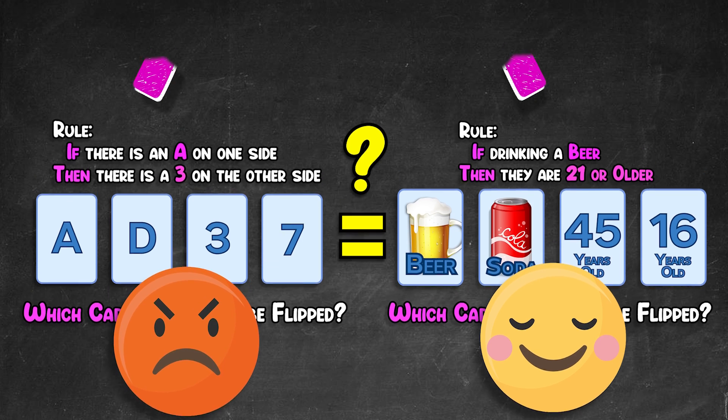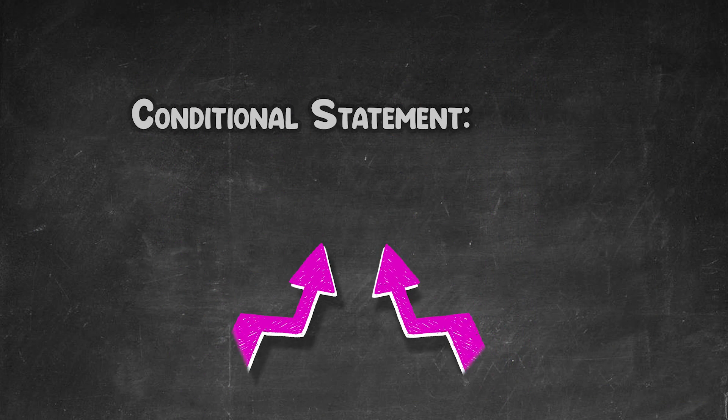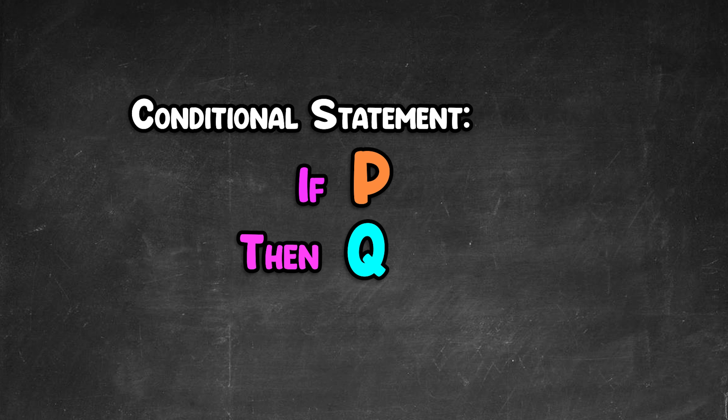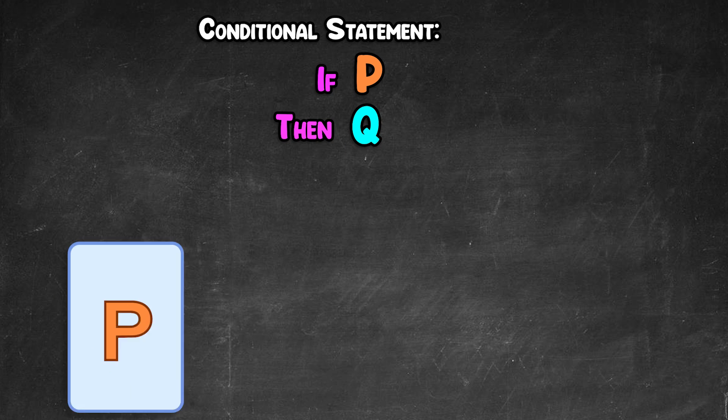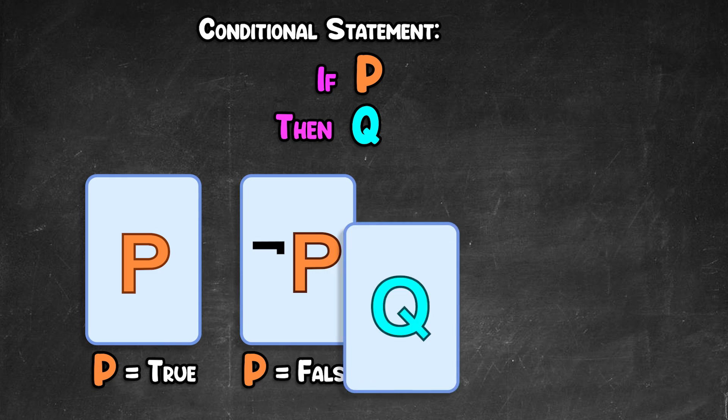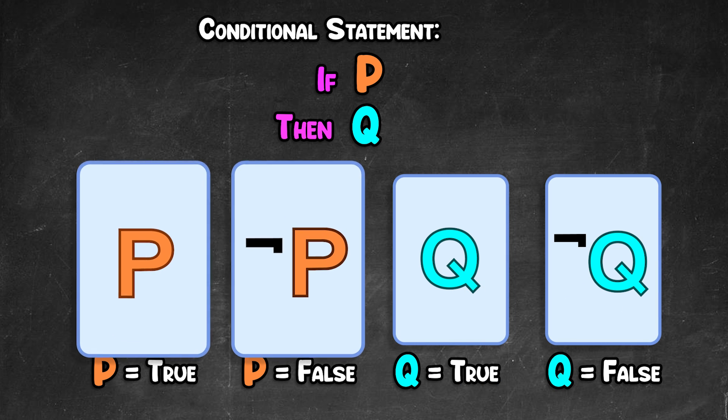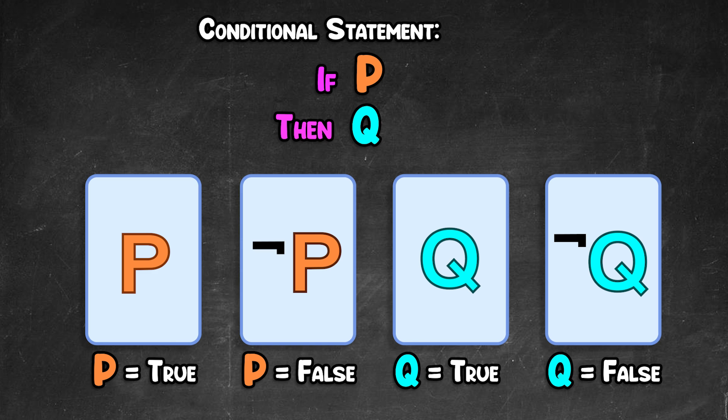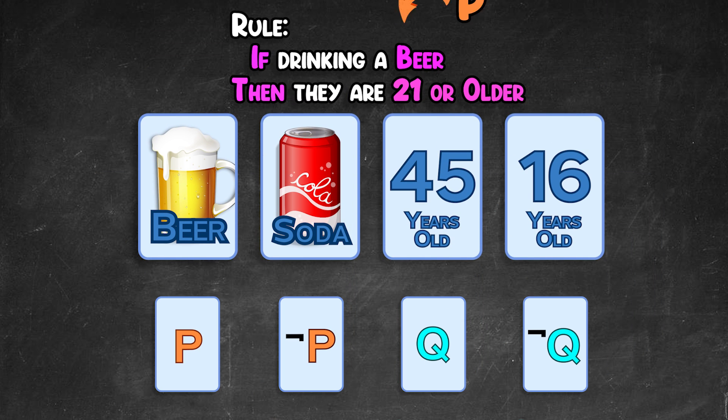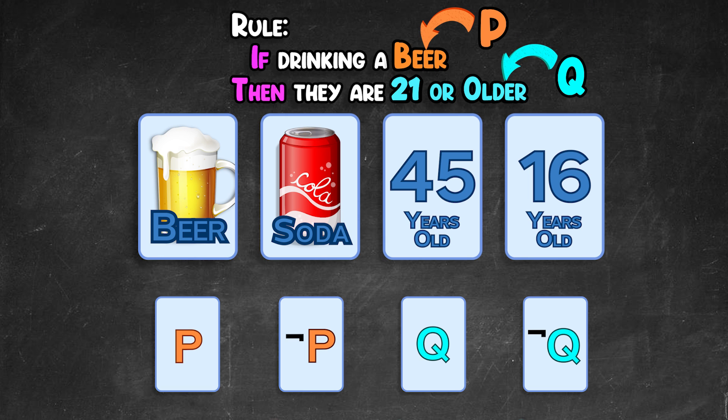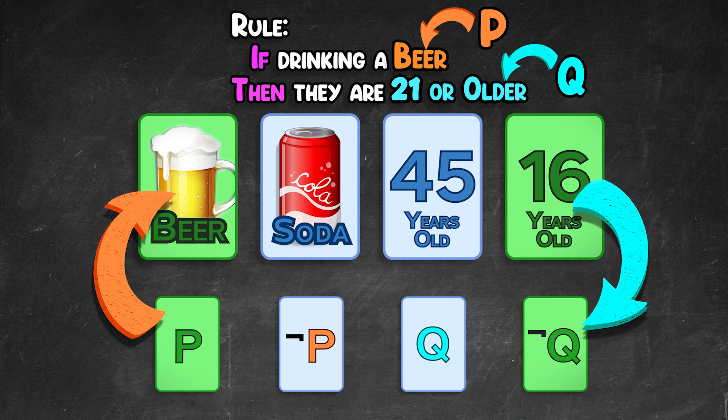Well, both of these problems have the conditional statement if P, then Q as the rule. The four cards are then P and not P, Q and not Q, every possibility for both P and Q. In the drinking example, the beer was P, and 21 years or older was Q. We needed to ID the P card, the person drinking beer, and we needed to check what the underage person was drinking, the not Q card.